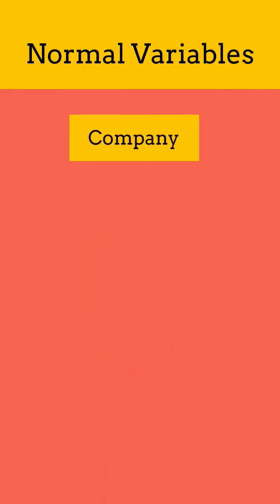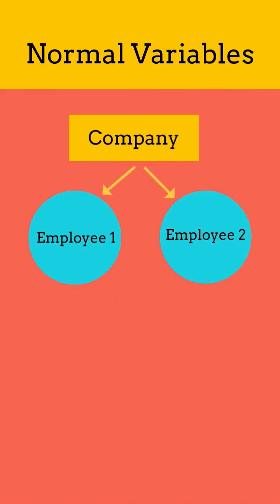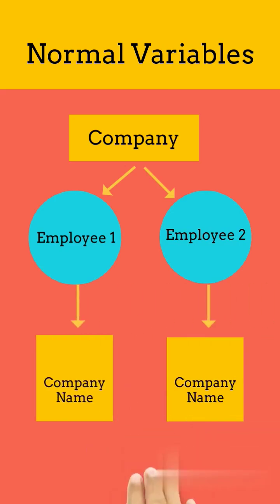Consider a parent class 'Company' and many employees working for the company. We will create an object for each employee. The company name for all the employee objects will be the same. So if we define a normal variable in the class with the name as company name, then every time we create an object, Java will allocate new memory for that object and the class name variable.